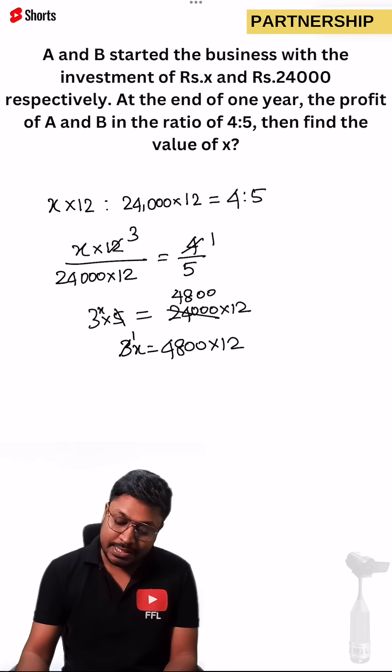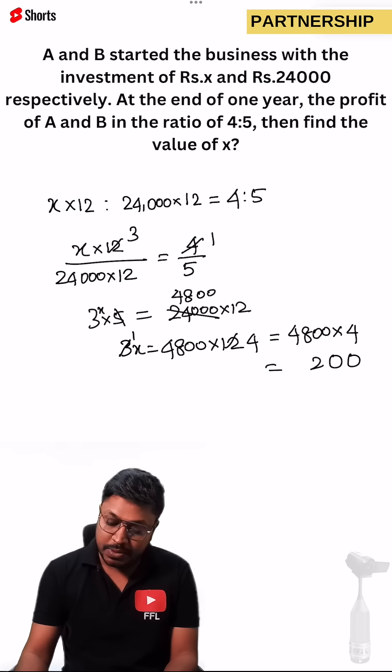And we can cancel, 3s are 3, 3s are 12. So finally 4,800 into 4. That means 0, 0, 32, 3, 16, 17, 19.